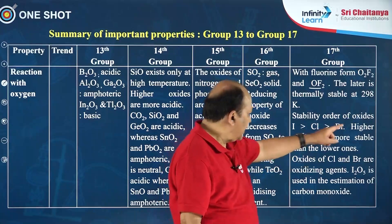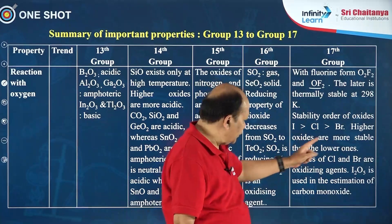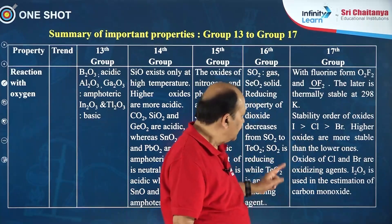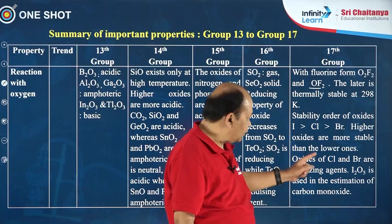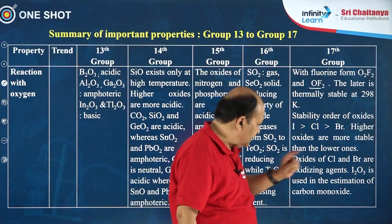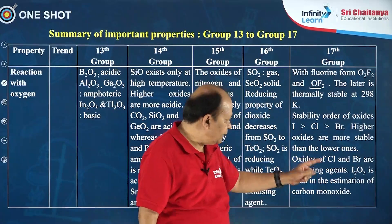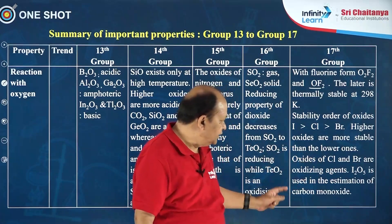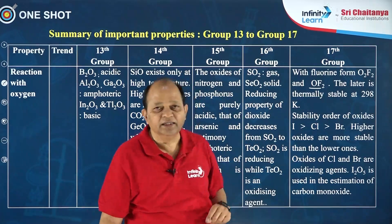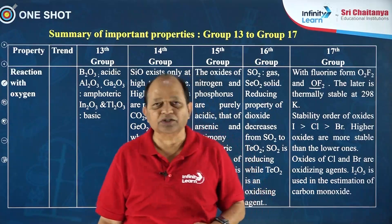Higher oxides are more stable than lower oxides. The oxides of chlorine and bromine are oxidizing agents, and iodine pentoxide is useful in the estimation of carbon monoxide.